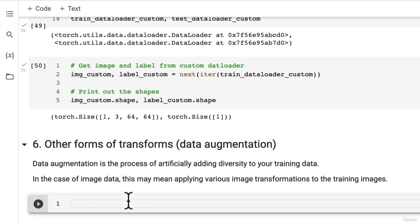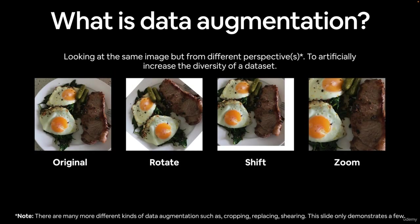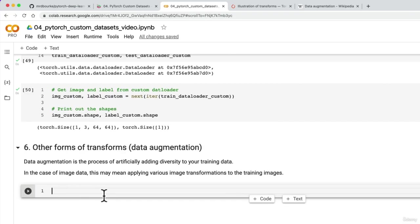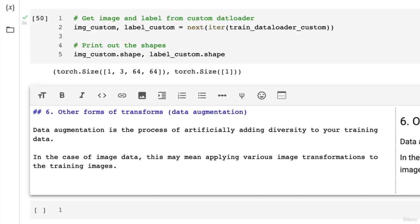Now let's have a look at one type of data augmentation in particular — Trivial Augment. I've got a slide here. Data augmentation is looking at the same image but from different perspectives, to artificially increase the diversity of a dataset. If our original image is on the left, we could apply a rotation transform, a shift transform on vertical and horizontal axes, or a zoom transform. There are many different kinds of data augmentation — cropping, replacing, shearing — and this slide only demonstrates a few. I'd like to highlight another type used to recently train PyTorch TorchVision image models to state-of-the-art levels.